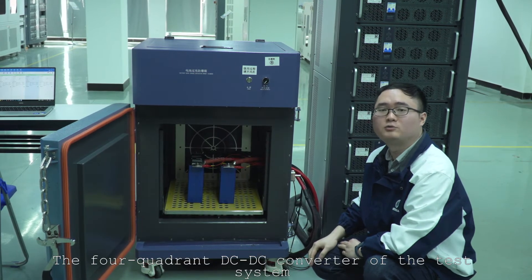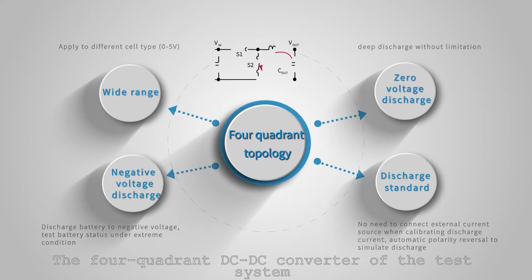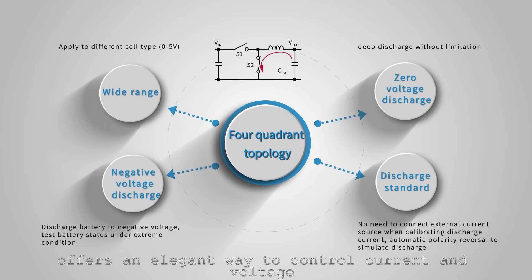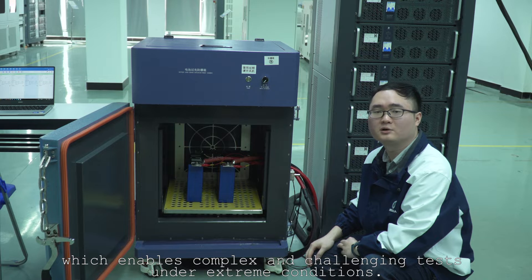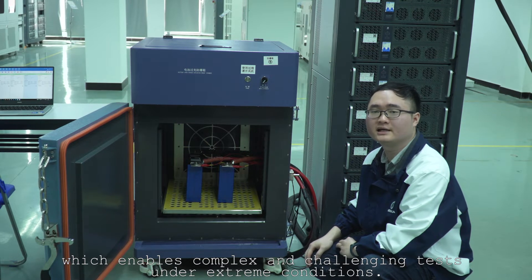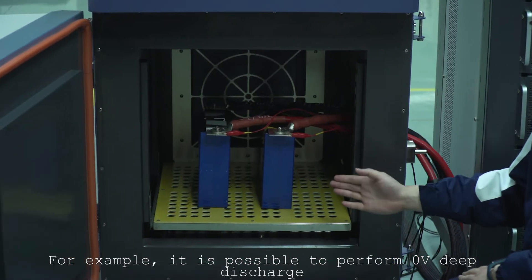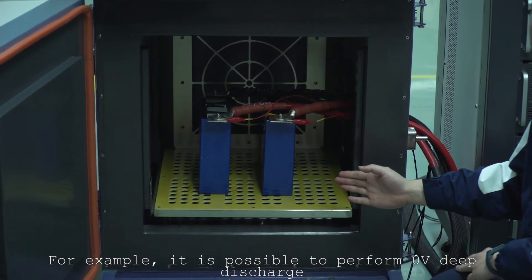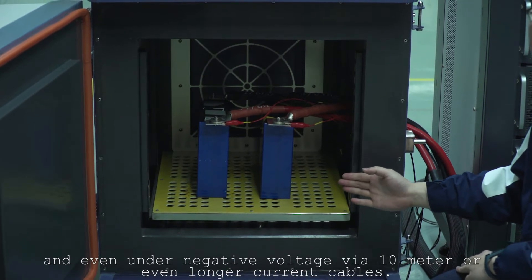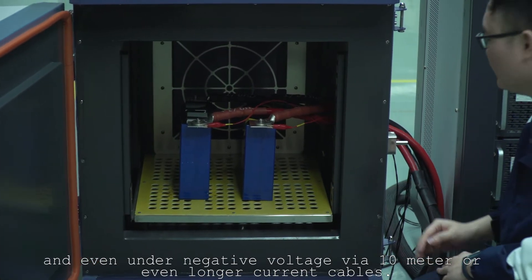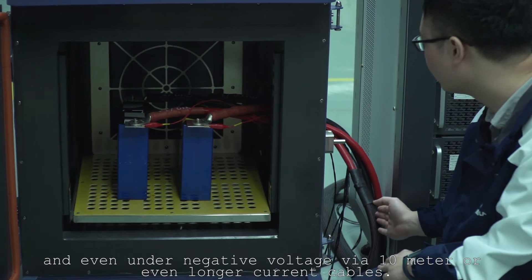The four-quadrant DC to DC converter of the test system offers an elegant way to control current and voltage, which enables complex and challenging tests under extreme conditions. For example, it is possible to perform 0V deep discharge and even under negative voltage via 10m or even longer current cables.